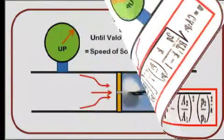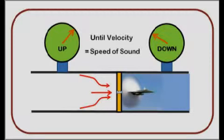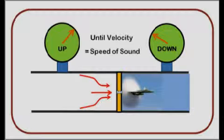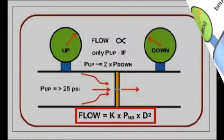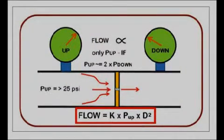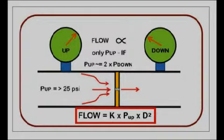An interesting phenomenon occurs when the velocity reaches the speed of sound in the orifice — it can't flow any faster. This is similar to why you see lightning before you hear thunder: thunder can only travel at the speed of sound, while light travels almost instantaneously. When the absolute pressure upstream of the orifice equals at least twice the downstream absolute pressure, this speed-of-sound velocity is reached. Then the flow is only dependent on the upstream pressure, and increased restrictions downstream will not affect flow.